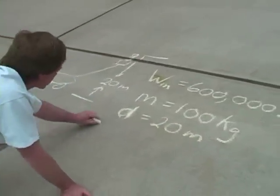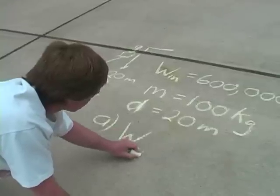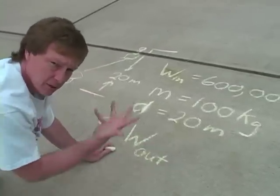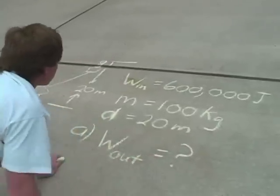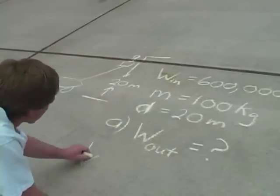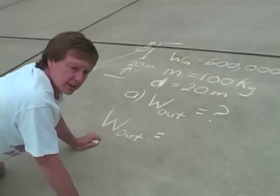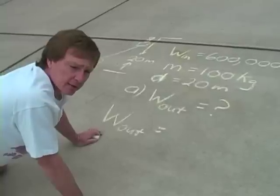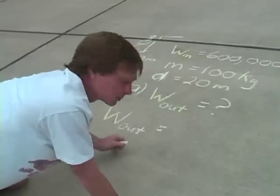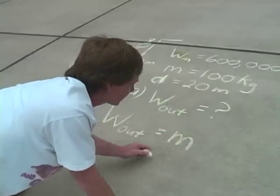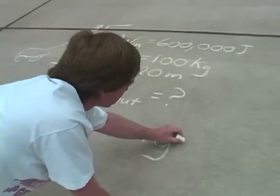And my first question is, what's the output work? How much energy have I gained by raising myself up in that 20 meters? Well, my output work is force times distance. But my force is my weight. And my weight is the product of my mass and the acceleration of gravity. So my output work is my mass times the acceleration of gravity. That's the force. And the distance is that height of 20 meters. That's mgd.